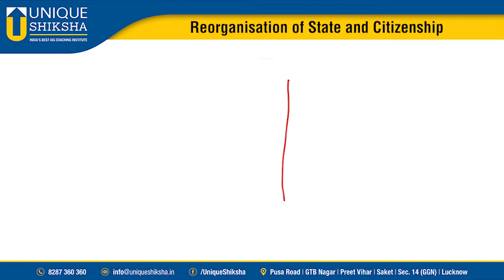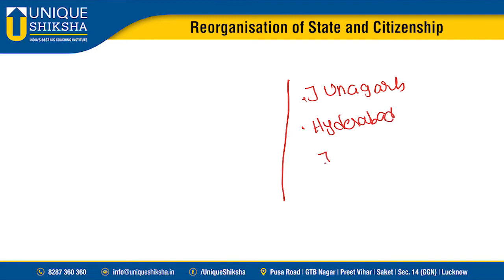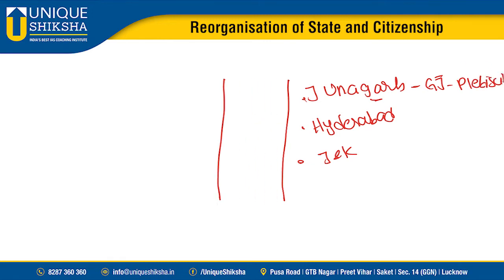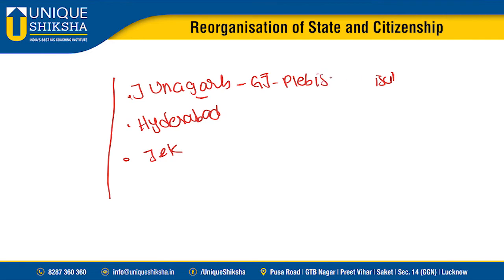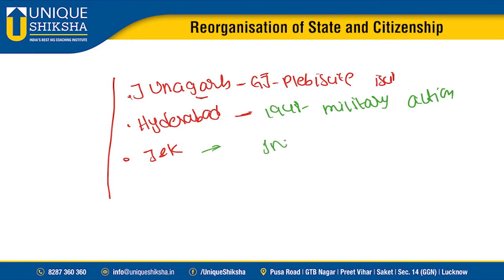Immediately after independence there were issues with Junagadh, Hyderabad, and J&K joining India. Junagadh, which is part of Gujarat, joined after a plebiscite — a referendum taking the views of the people. Hyderabad was acceded to the Indian Union in 1948 through military action. J&K signed through the Instrument of Accession.